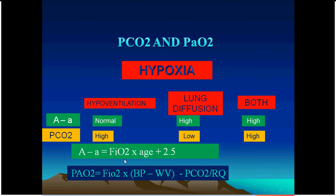The alveolar-arterial gradient is calculated as: FiO₂ × barometric pressure, minus water vapor pressure, minus PaCO₂ divided by the respiratory quotient — this gives alveolar oxygen. Subtracting arterial oxygen (measured by ABG) gives the A-a gradient. A normal value is FiO₂ × (H+2.5); an elevated gradient indicates a pathological diffusion problem.